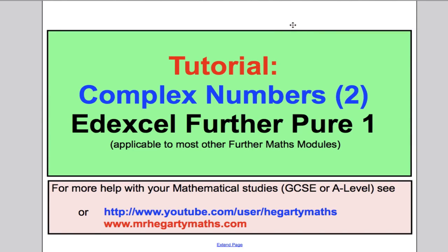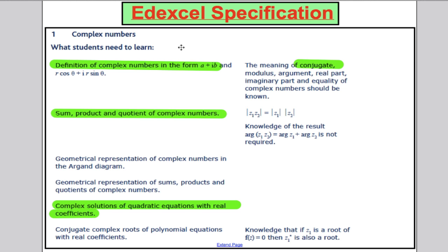Welcome to another tutorial on complex numbers as part of the Edexcel Further Pure One Maths course. This is my second video on complex numbers. In green is what I think we have done in the previous videos: we've defined a complex number, talked about the conjugate, added, multiplied and divided complex numbers, and seen how complex numbers arise from solutions to quadratic equations. I'll talk more about equations with complex numbers in another video.